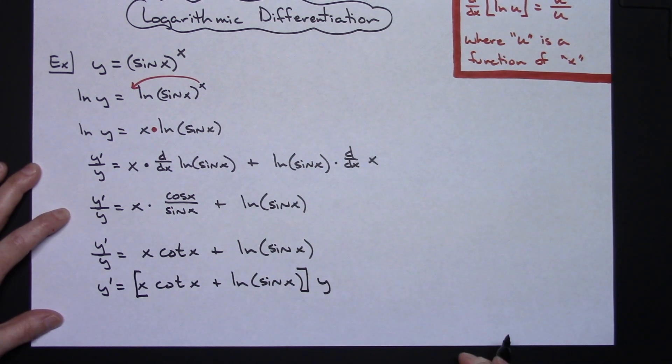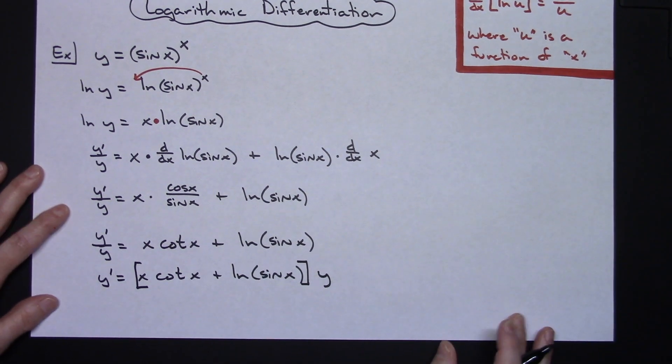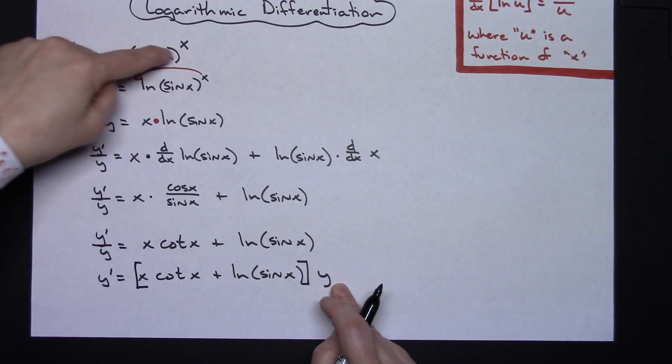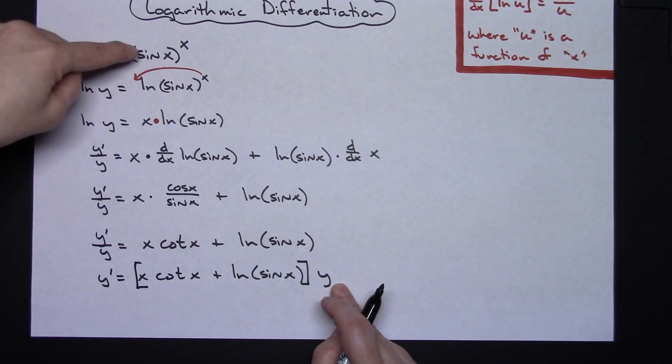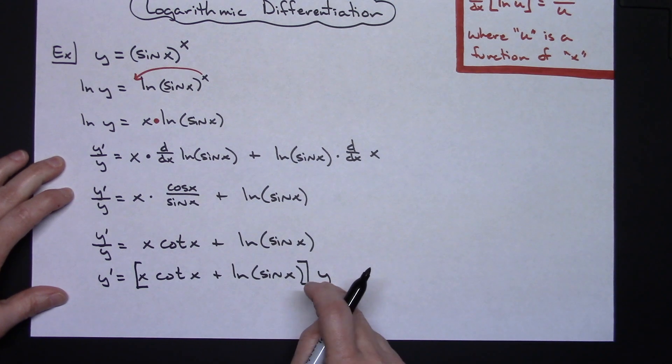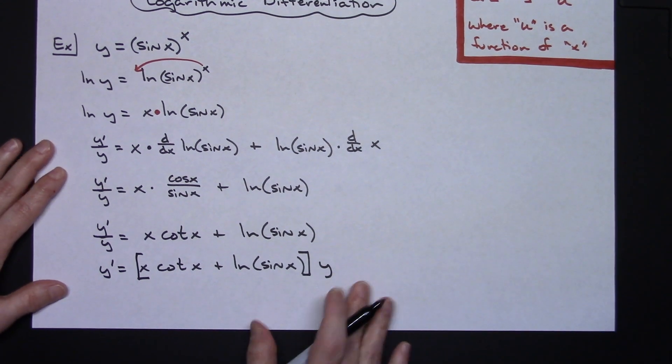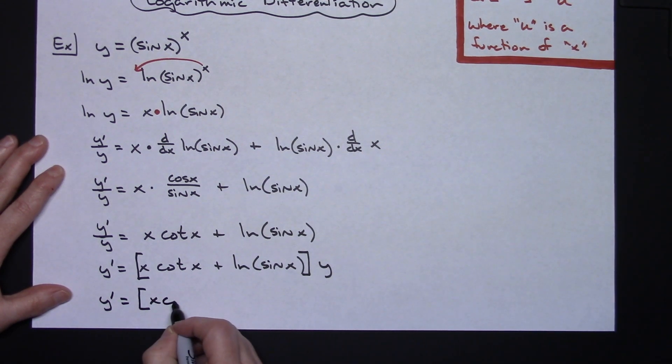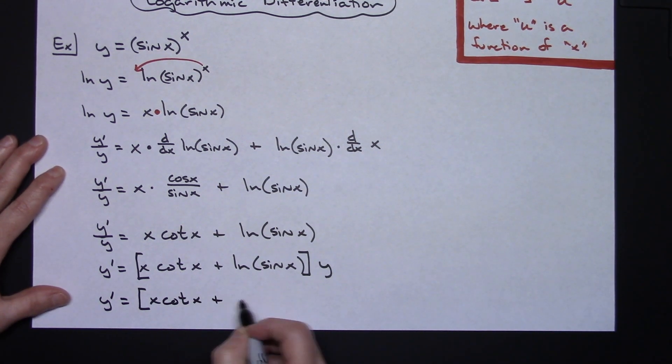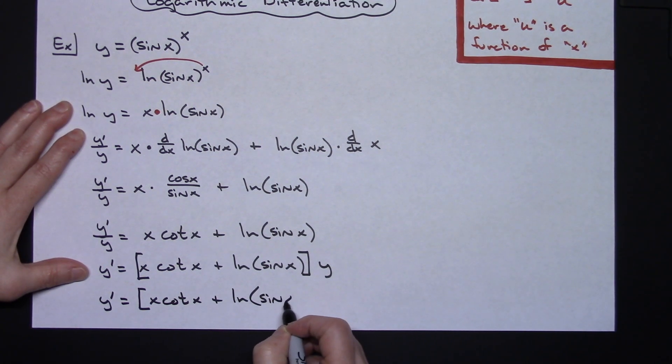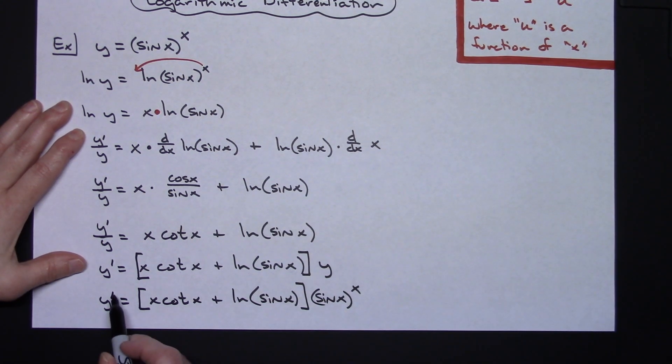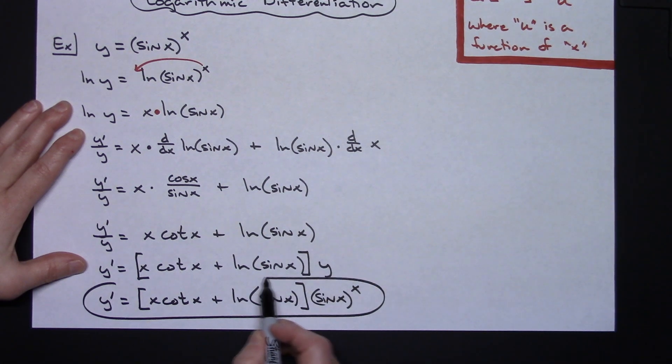The very last step would be to take your y and replace it with what y equals up here in our beginning equation. Y was equal to the sine x raised to the x, so I'm going to do that replacement. I'll have a final answer of y prime equals x cotangent x plus natural log sin x, and then substituting in sin x raised to the x power.